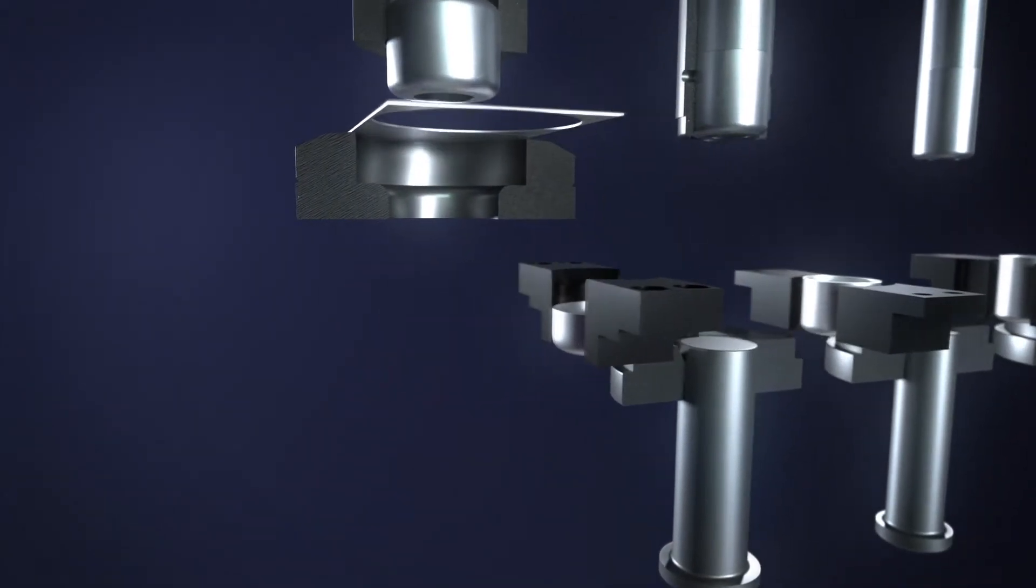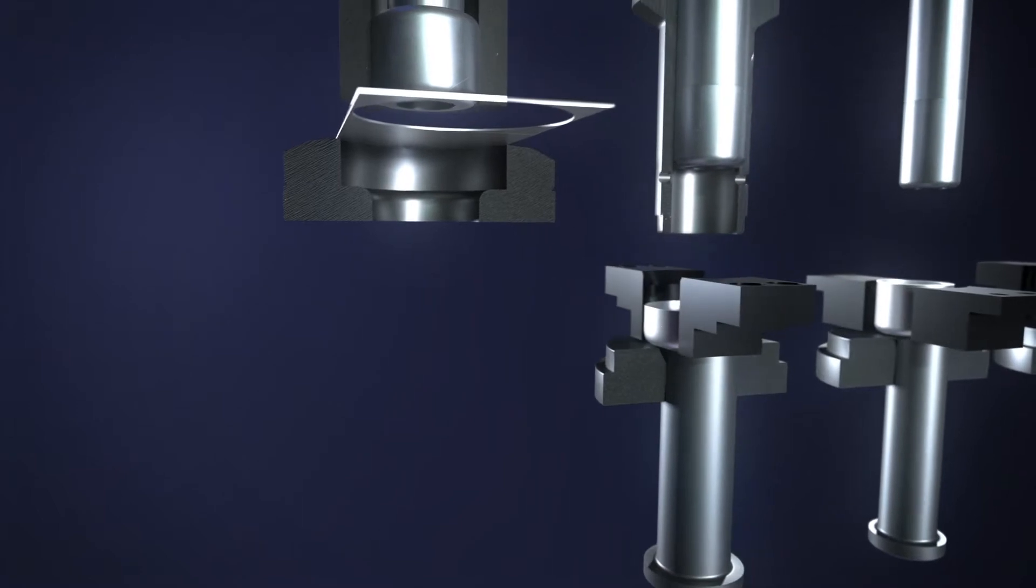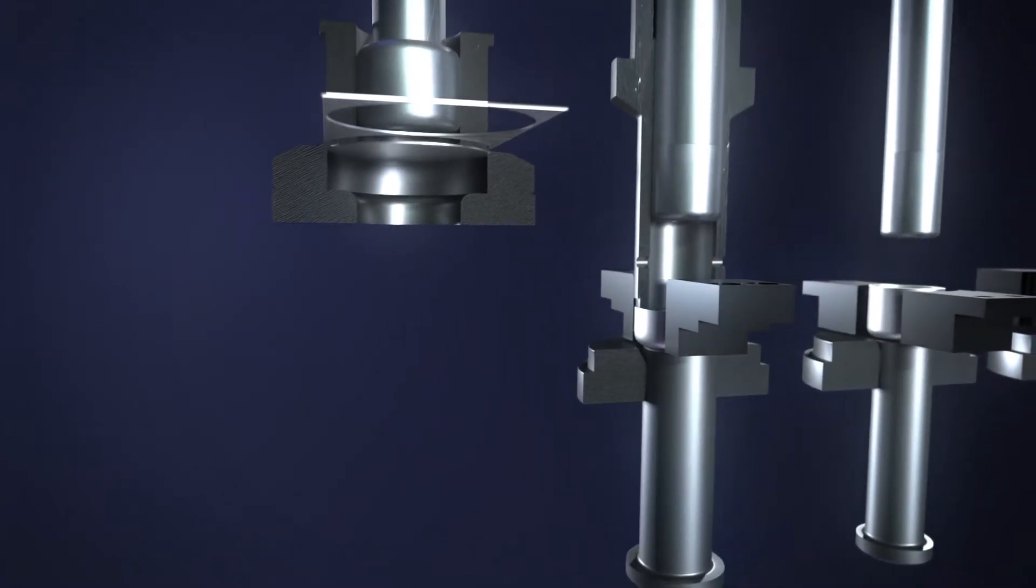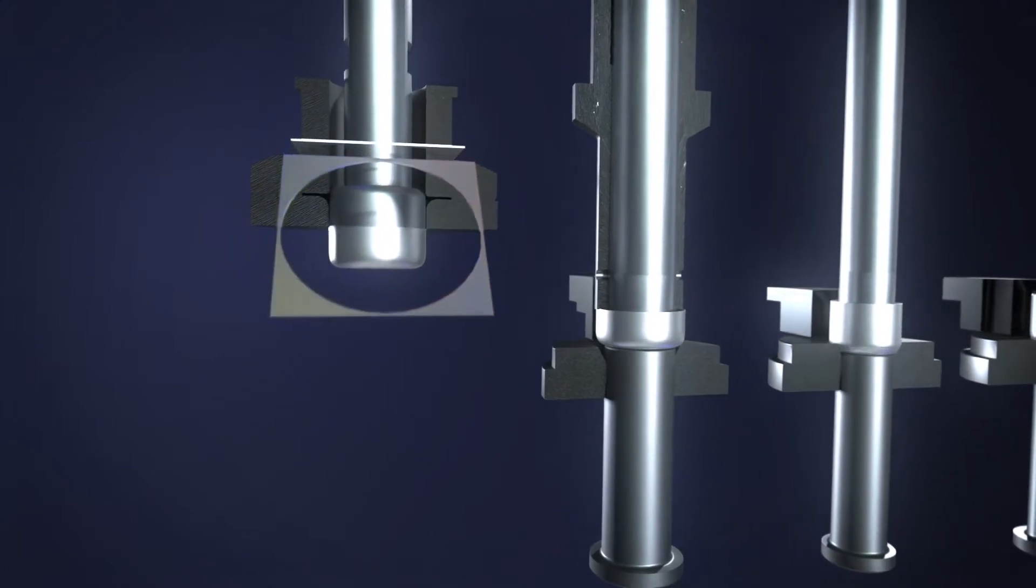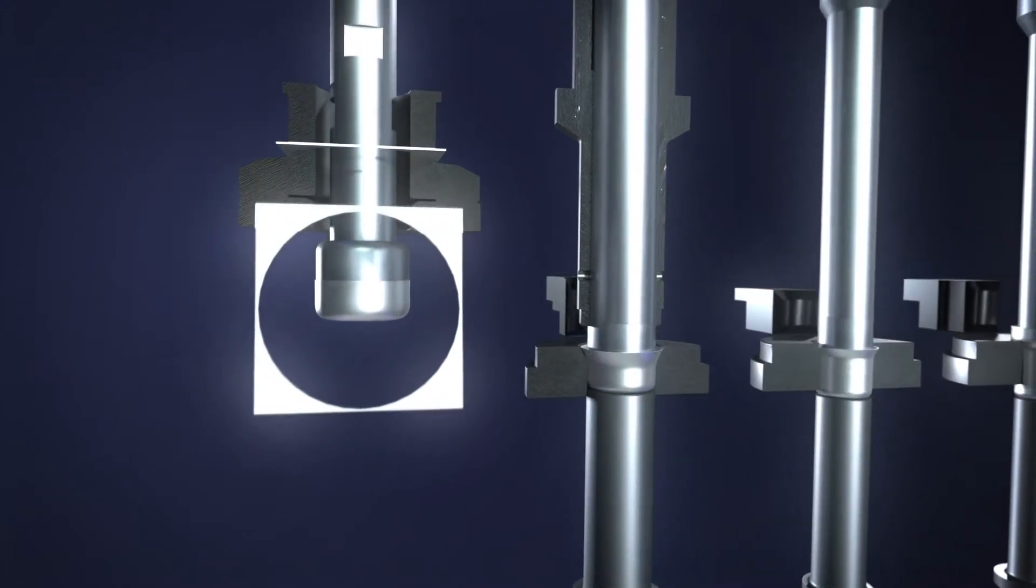The transfer press process begins by cutting out a blank from the flat metal of the coil. The blank is deep-drawn into a cup in the first step. In the example shown here, both operations are combined in the first station.